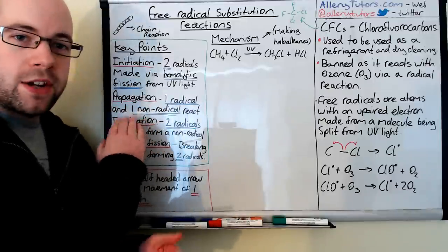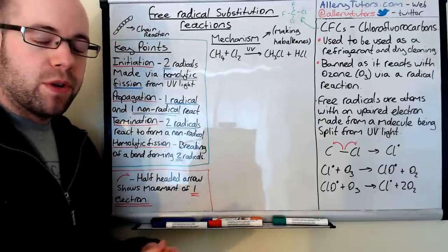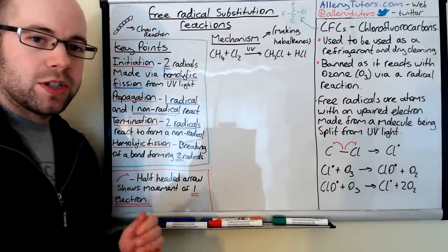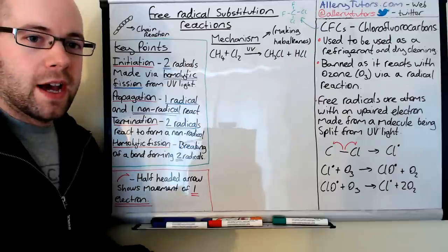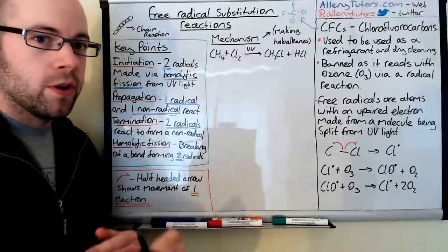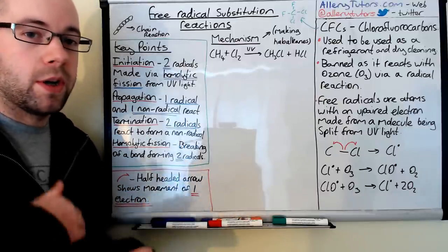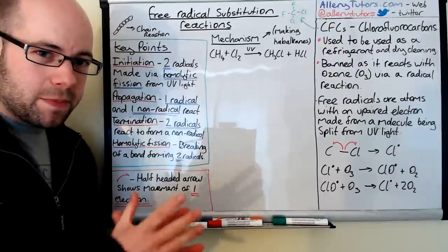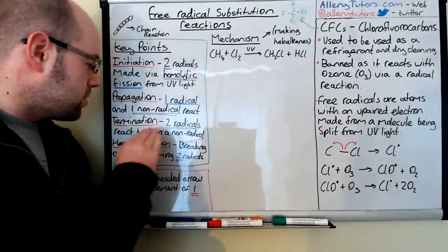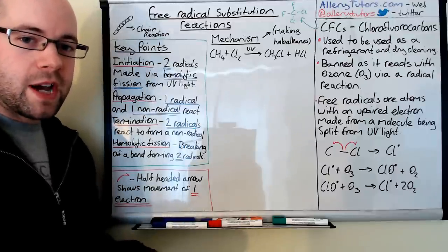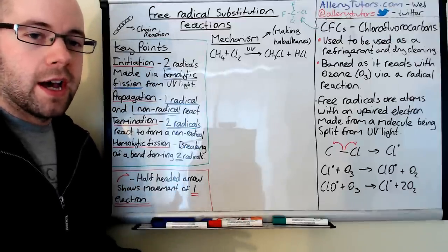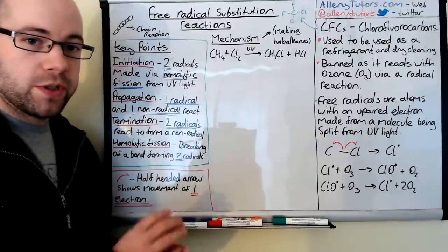Another step is propagation. In a free radical mechanism, propagation is where one radical and one non-radical react together, and we call this a chain reaction. This is where you constantly get new radicals that have been reformed, and this can go on for a long period of time or it can end immediately. There's another step called termination. This is where two radicals will react to form a non-radical, effectively ending the chain reaction.